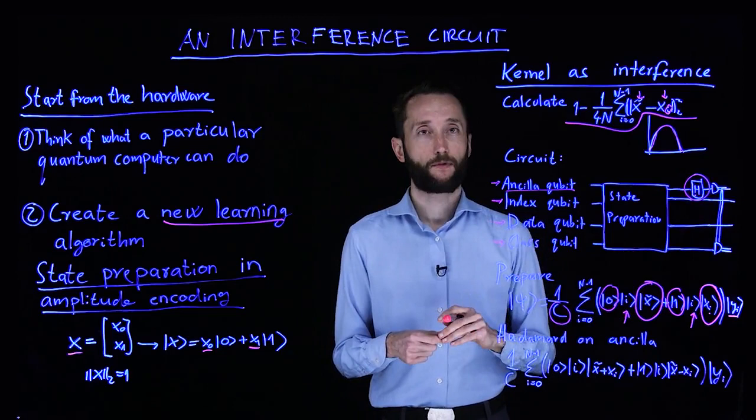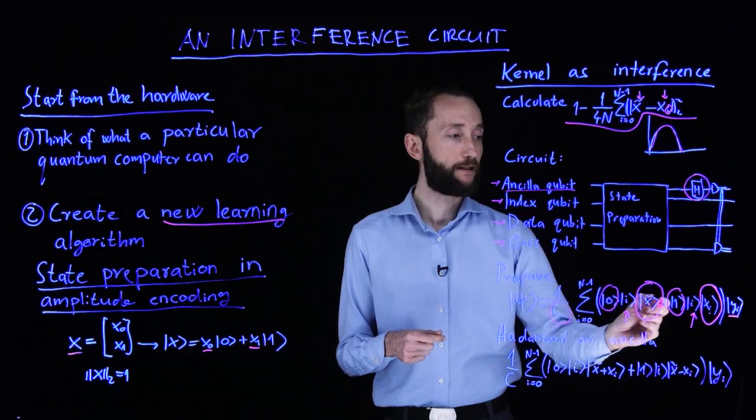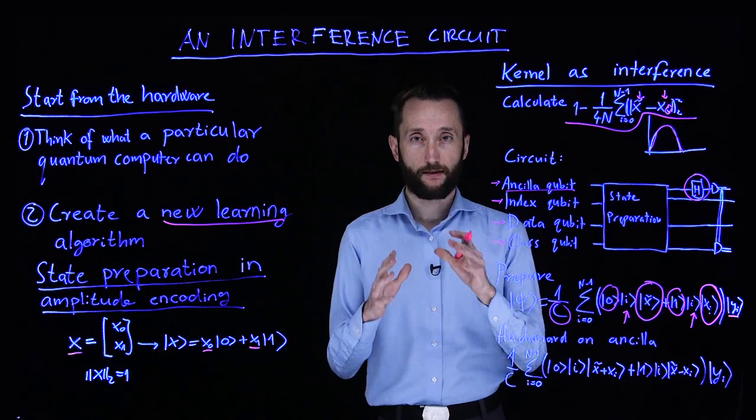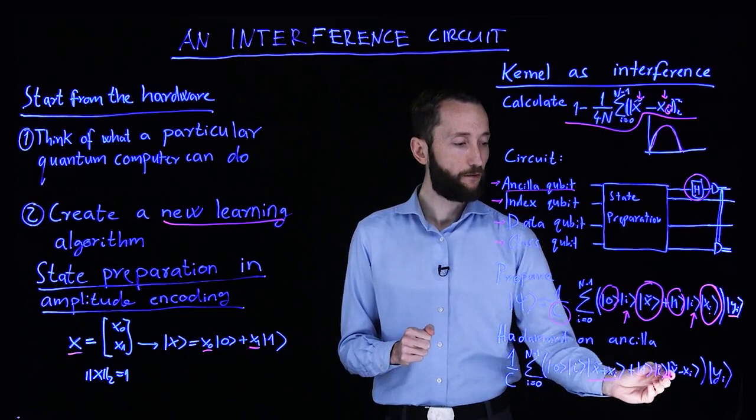So since the zero state of the ancillor is entangled with the test state and the excited state is entangled with the data instances, by applying the Hadamard gate again on the ancillor, you interfere the data instances with your test instance. So the state that you are going to get will have this form.